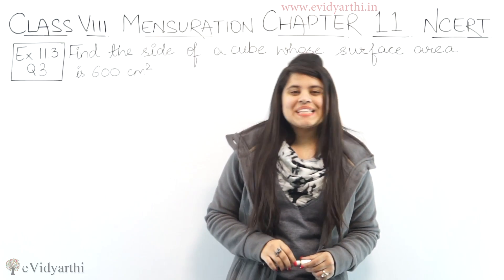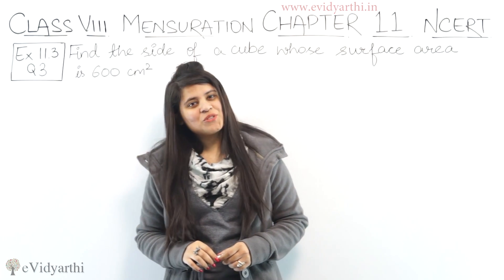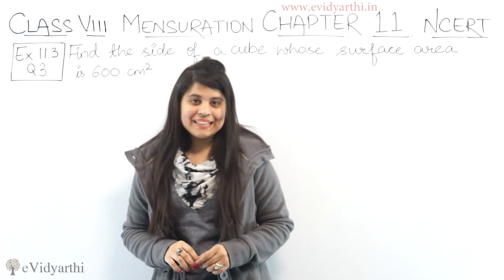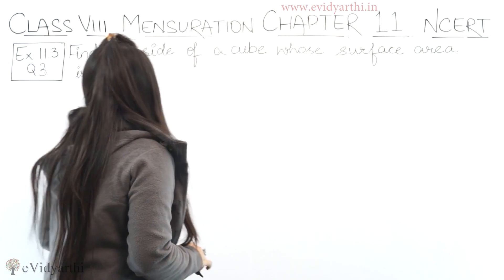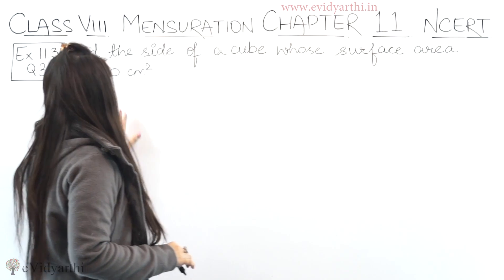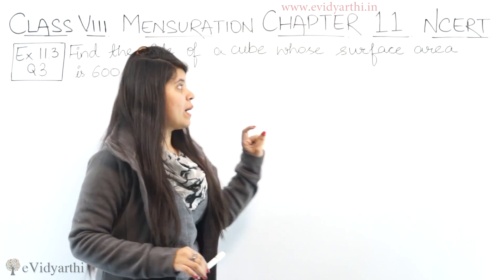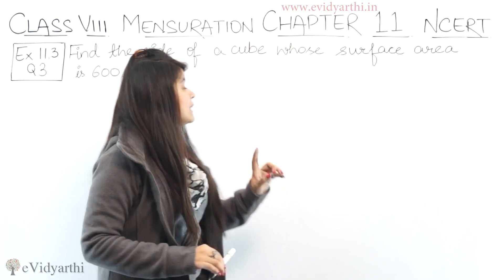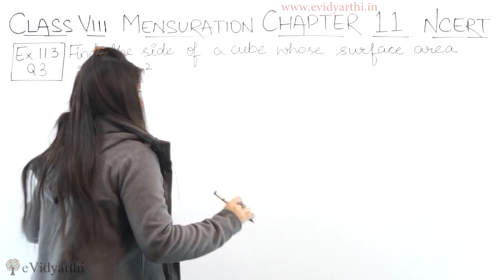Hello everyone, this is Mansi from Evintyati Jones, coming to question number 3, exercise 11.3. In this question we have to find the side of a cube whose surface area is 600 centimeter square. So we have to find the cube's side given its surface area.